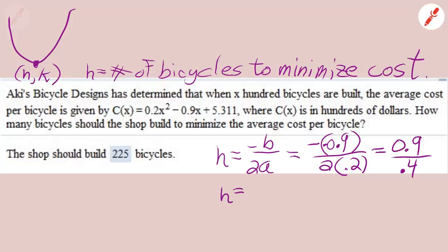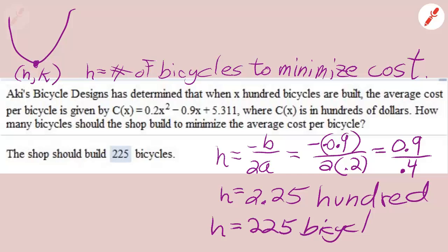And that's going to be h. How many bicycles do we build in order to make the cost per bicycle to Aki be its very smallest? 225, remembering that that 2.25 is in hundreds. All we had to do there was find h.